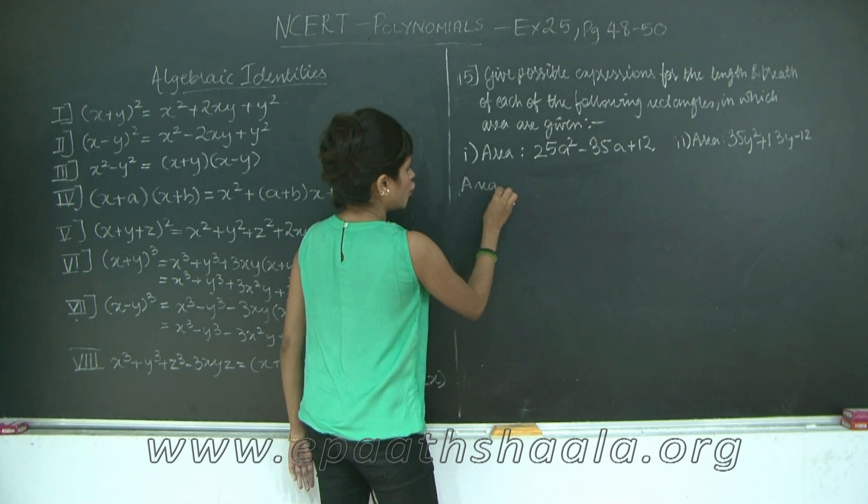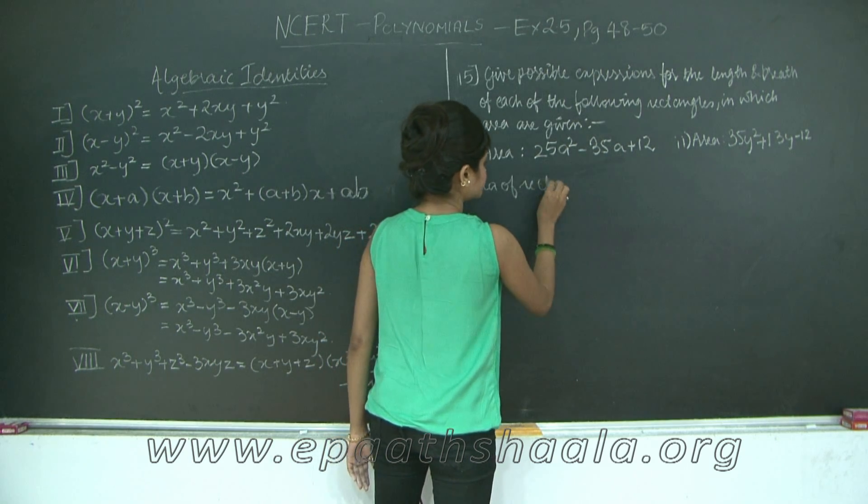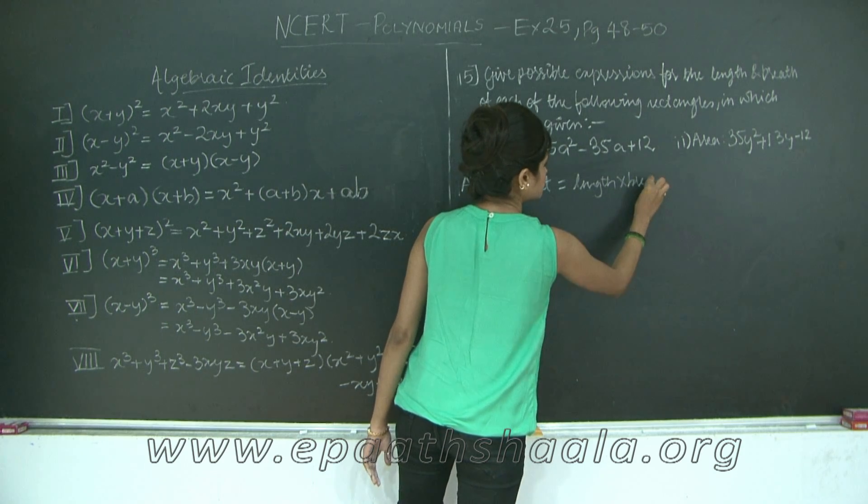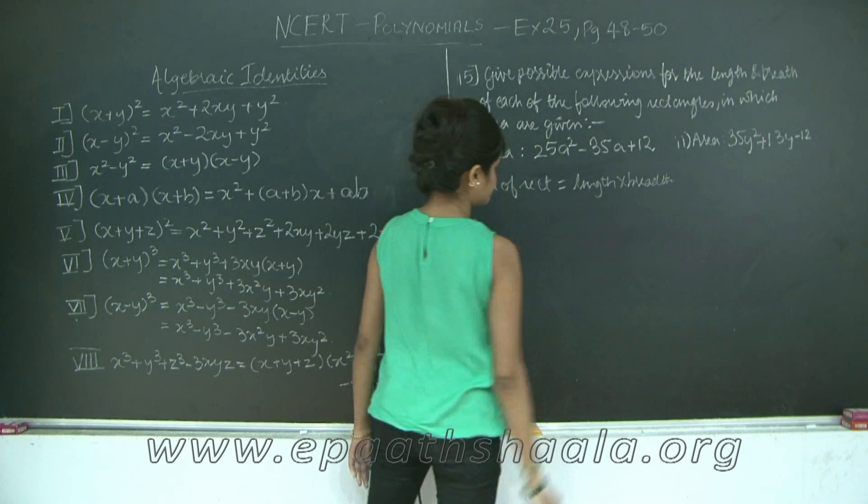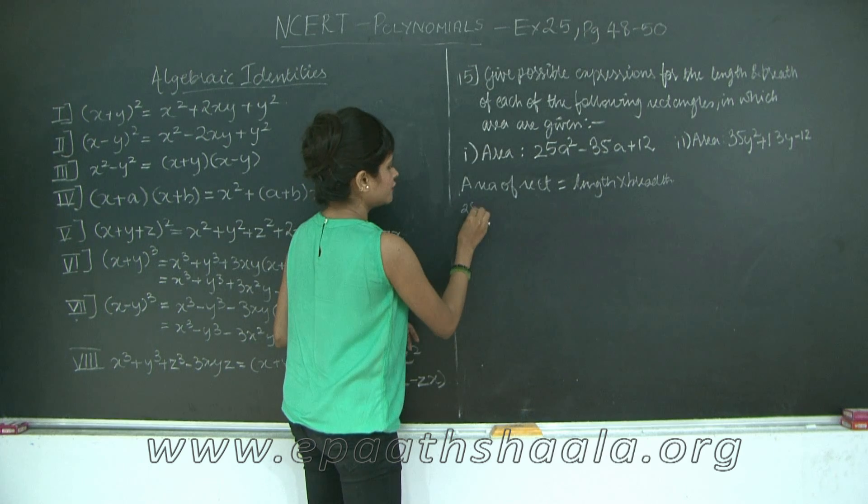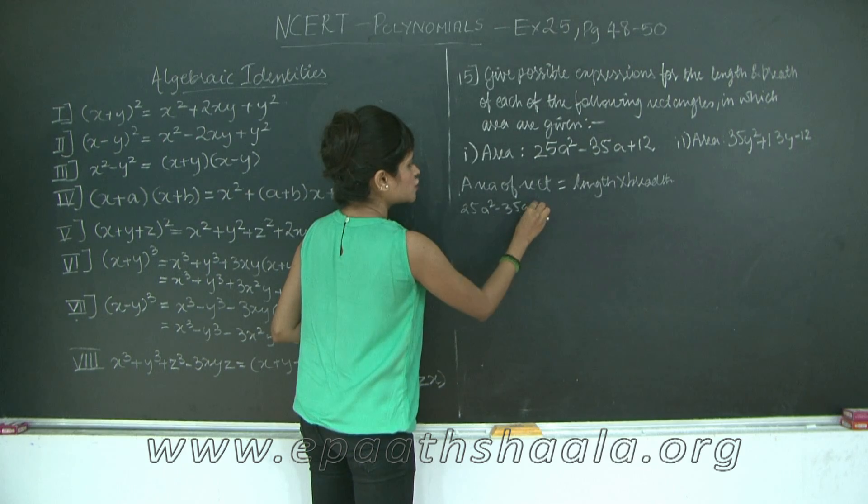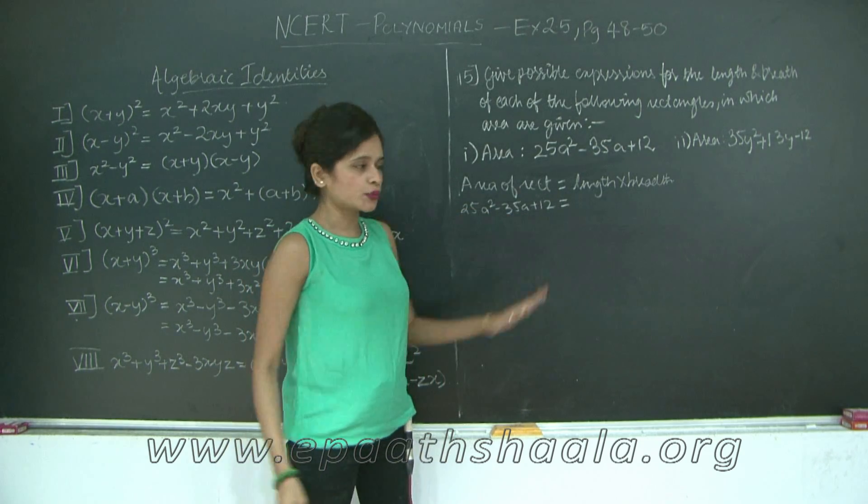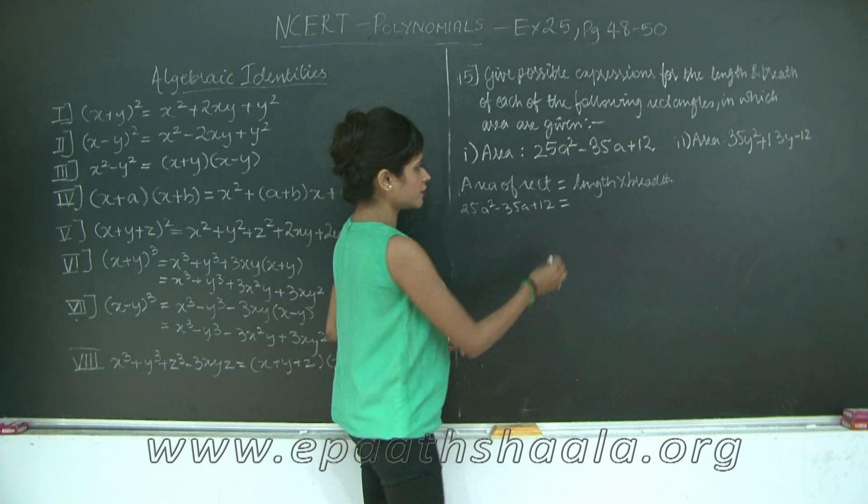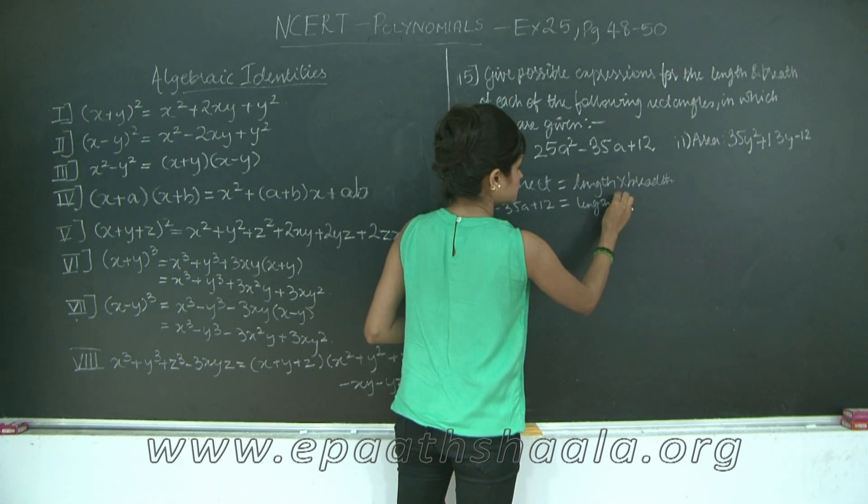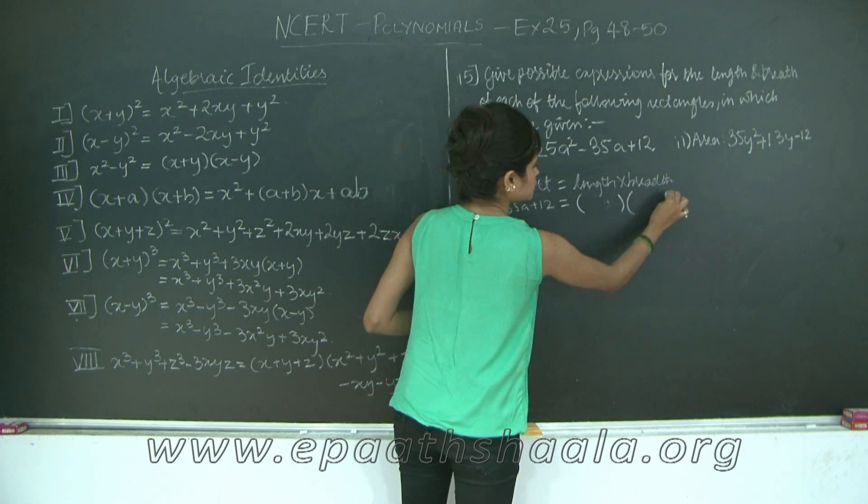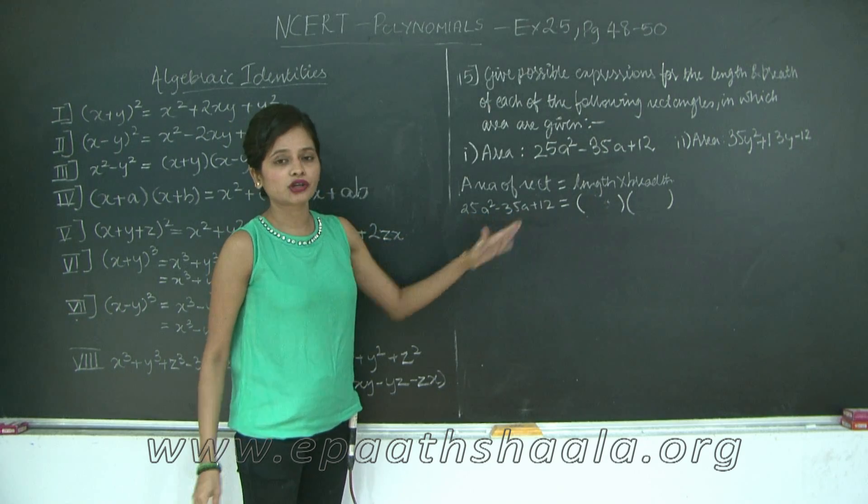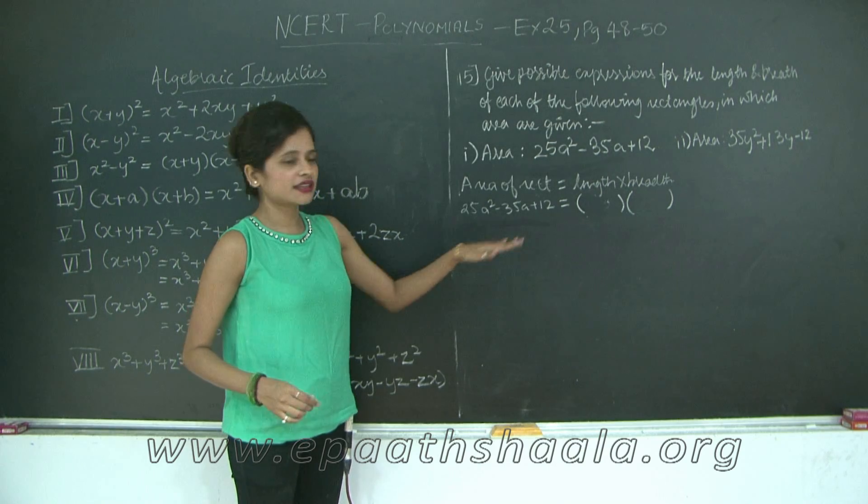Now we know that solution for the first one. Area of rectangle is nothing but length into breadth, which means my area 25a² minus 35a plus 12 I need to factorize it into its products, that is two products, one is going to be the length and the other one is going to be breadth. Now what does this mean? I need to factorize.